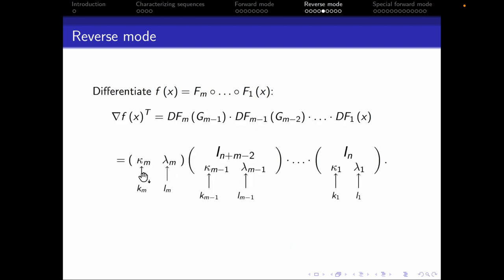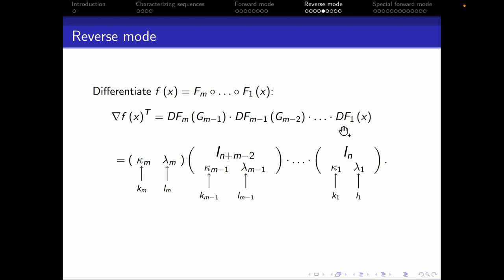We'll call these non-zero entries kappa and lambda. So we have kappa_m and lambda_m for the Jacobian of fm, and for the Jacobian of f_{m-1} we have the identity matrix of size n+m-2 with a row vector at the bottom containing kappa_{m-1} and lambda_{m-1} at positions k_{m-1} and l_{m-1}. This goes all the way down to the Jacobian of f1 at x. These kappa and lambda values are basically the derivatives of the elementary operations.